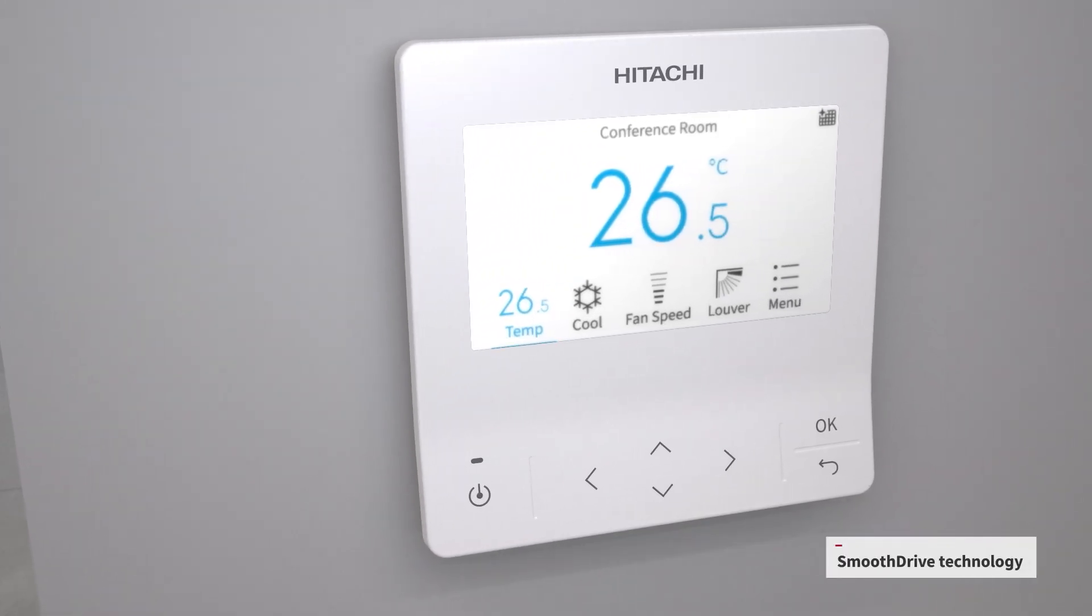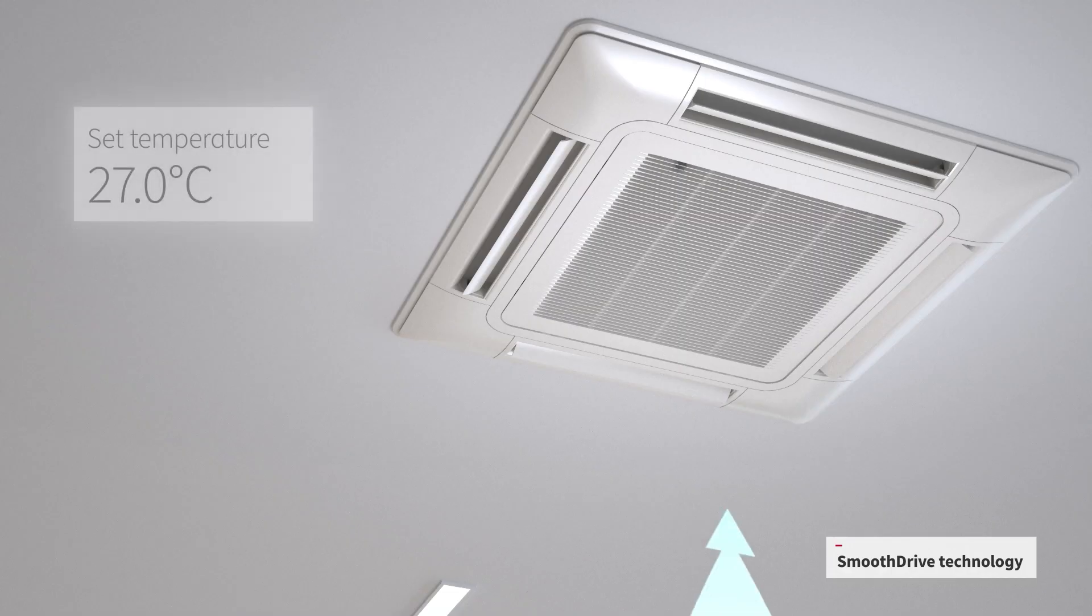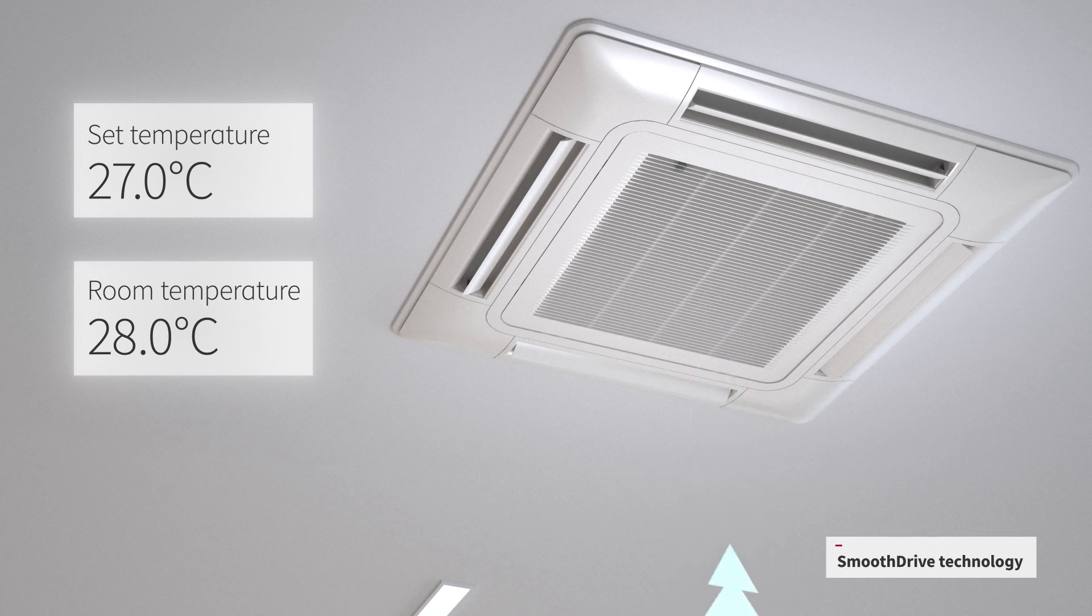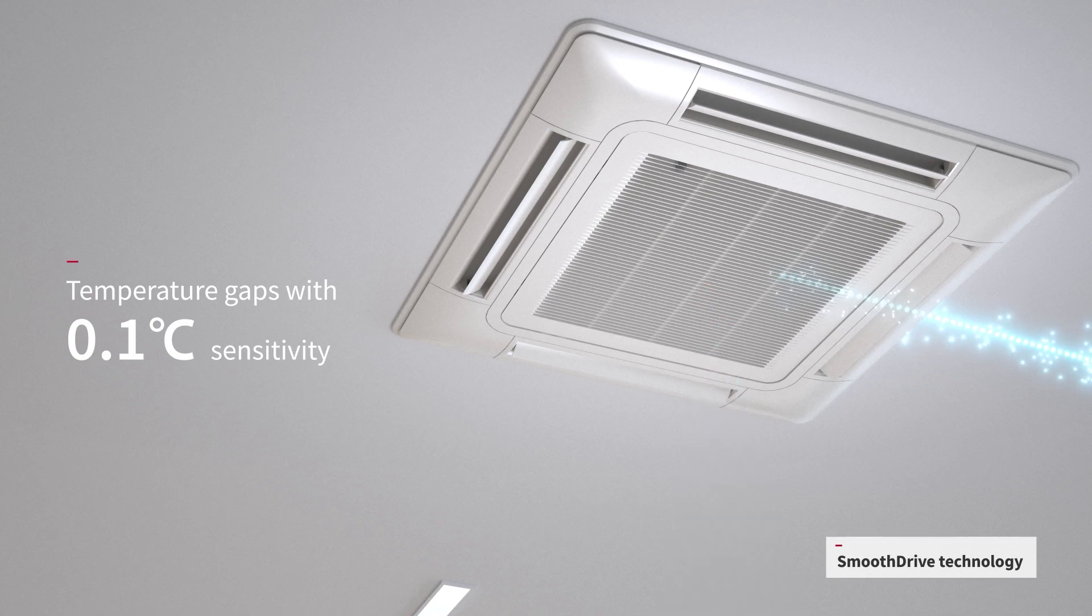But that comfort also comes from precisely maintaining the set temperature. SmoothDrive checks the gap between the room and the set temperature. This information is sent to the outdoor unit with 0.1 degrees precision.